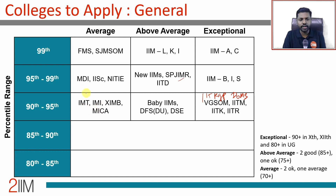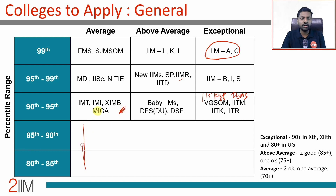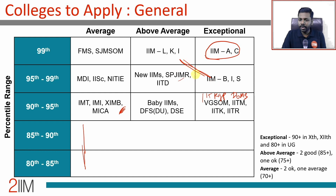If your scores are in the left two boxes — exceptional academics — then every other box in the table is also possible for you. If you are in a lower box, you are restricted to that box and the ones following it. For anyone on the right side, the left boxes are applicable by default. There is also some overlap — for example, above average academics with 99 percentile or exceptional academics with 95 to 99 percentile are somewhat correlated. Don't restrict yourself to just one specific box.